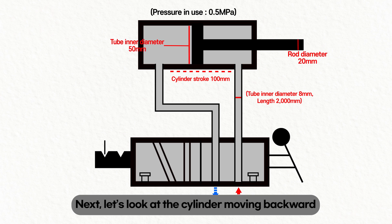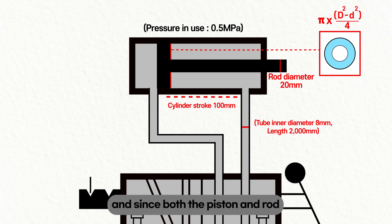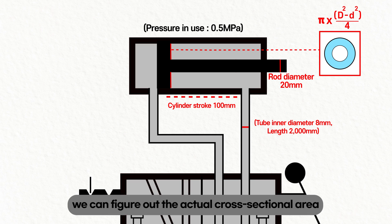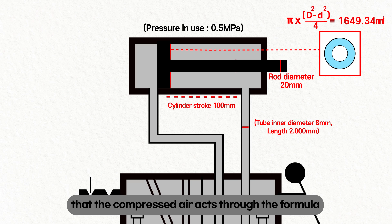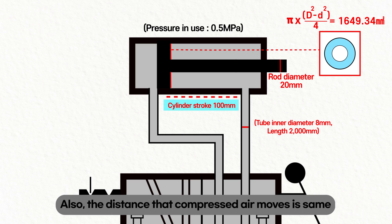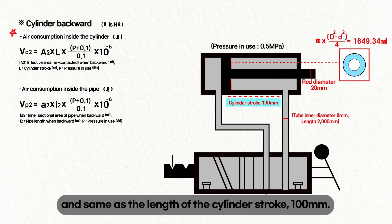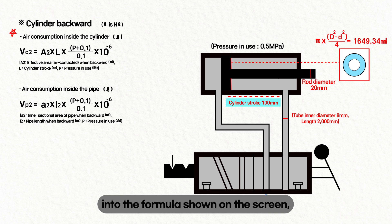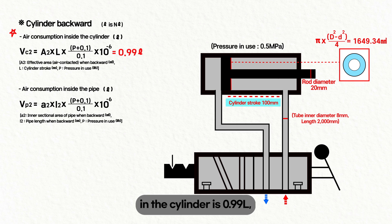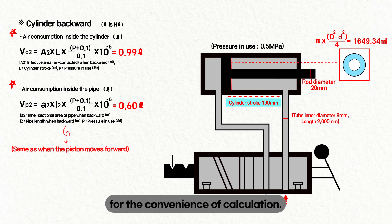Next, let's look at the cylinder moving backward. The compressed air inside the cylinder acts on the section excluding the rod's cross-sectional area from the piston's cross-sectional area. Since both piston and rod cross-sectional areas are circular, we can find the actual area using the bore diameter, rod diameter, and circle area formulas. The distance compressed air moves is the same as the cylinder stroke: 100 mm. Inputting these numbers, the air used in the cylinder is 0.99 liters, and 0.6 liters in the pipe — assuming the same pipe conditions as the forward stroke.